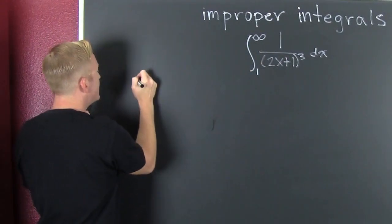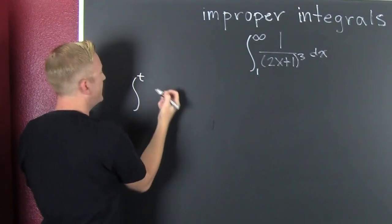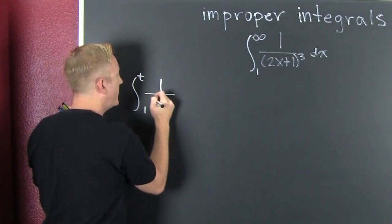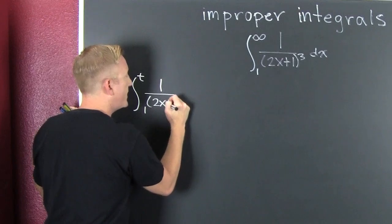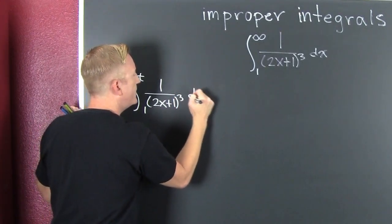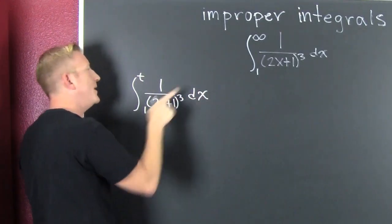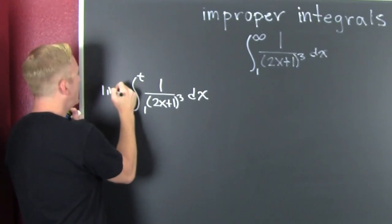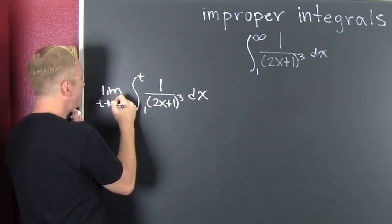So what do we want to do? We want to replace that infinity with T. Nice new markers. And 1 over 2x plus 1 to the third power dx. How do I make that equivalent to that? I go and I run the limit as T goes to infinity.